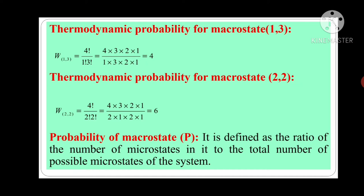Now, we will see the thermodynamic probability for macrostate (2,2). So, W for this macrostate is given by 4 factorial upon 2 factorial into 2 factorial. Here also, the number of particles is 2 plus 2 equals 4, small r is 2, and n minus r is 4 minus 2 equals 2. So, 4 factorial upon 2 factorial into 2 factorial equals 4 into 3 into 2 into 1 upon 2 into 1 into 2 into 1, which equals 6.